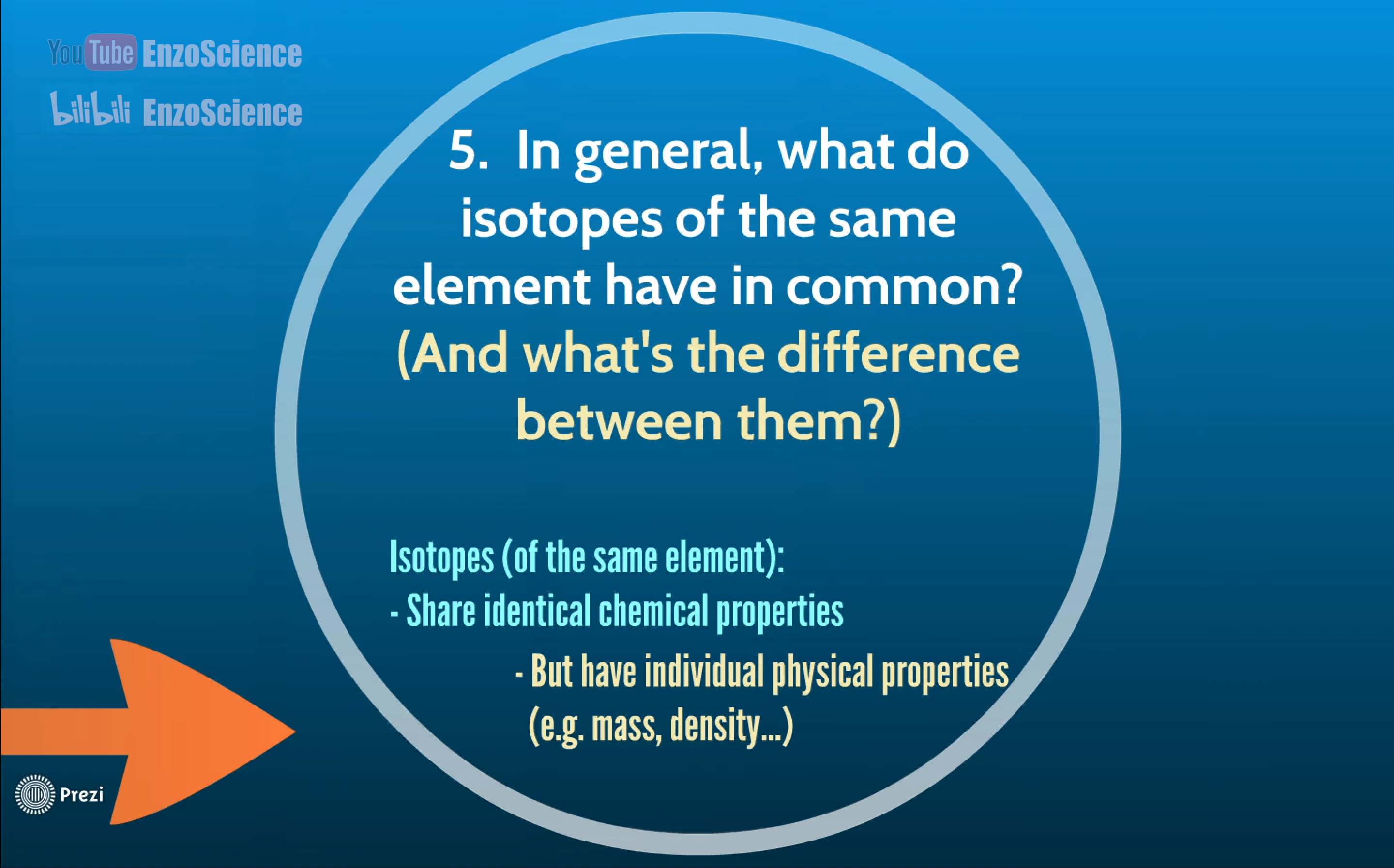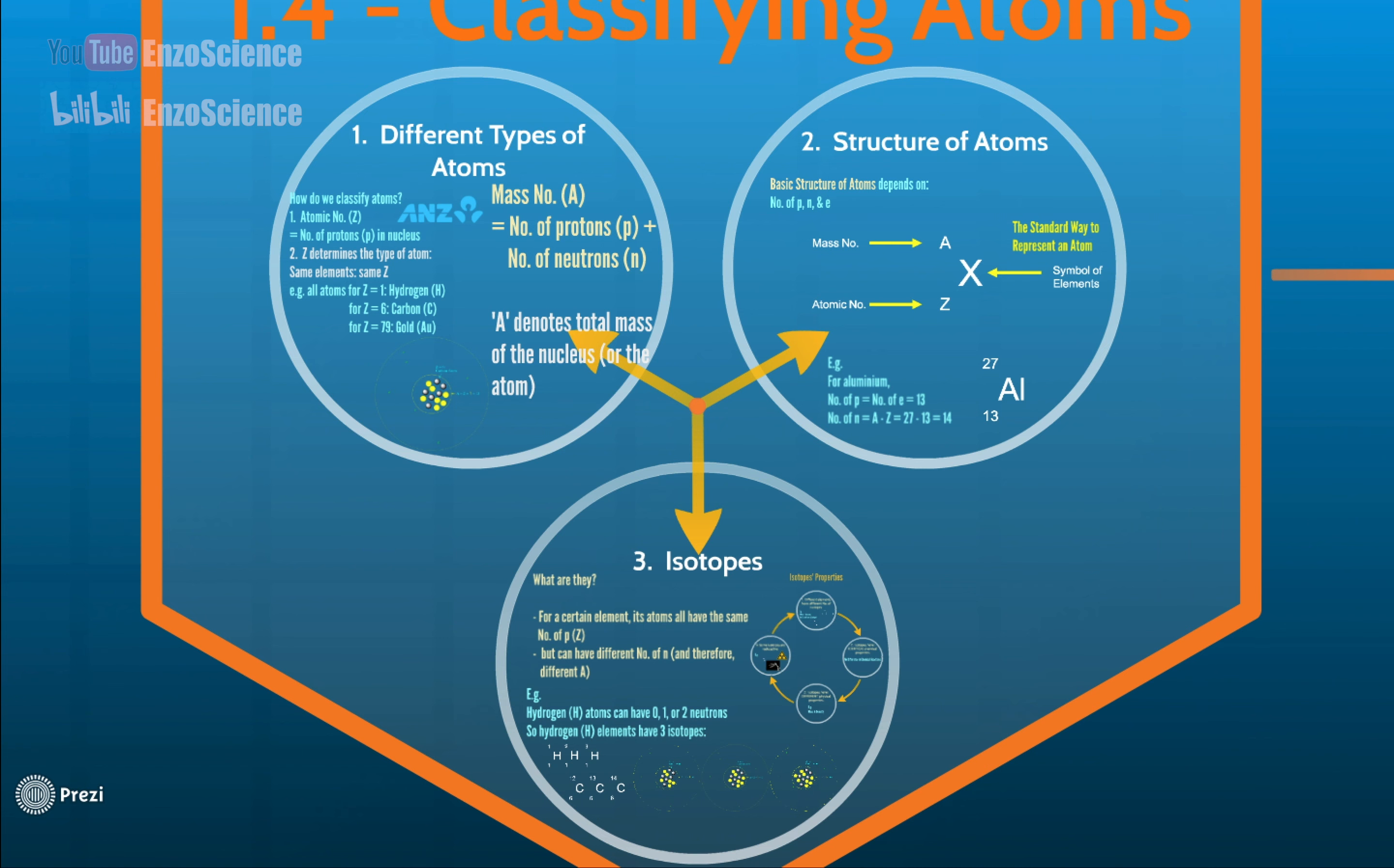Flashback time. Today, we unlocked section 1.4, classifying atoms. We introduced atomic number, which is capital Z, and mass number, which is capital A. Structure of atoms is denoted by element symbol, capital A and capital Z. For atoms with the same capital Z, but different capital A, they are isotopes, sharing the same chemical properties, but different physical properties.